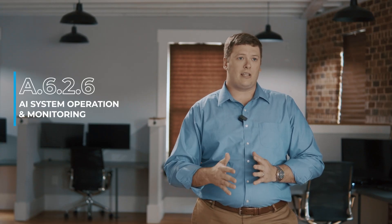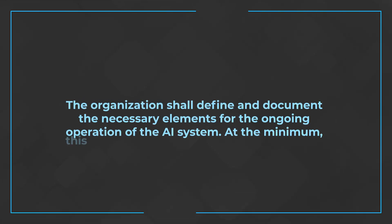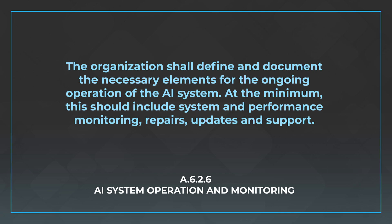The next control is A.6.2.6, AI system operation and monitoring. This control is all about defining how you're going to monitor the system as it's running. The organization shall define and document the necessary elements for the ongoing operation of the AI system — at minimum this should include system and performance monitoring, repairs, updates, and support. With an AI system there are external dependencies, data sets, compute resources, and more, so you'll need to figure out how to monitor the health and performance of that system and know when repairs, updates, and support may be needed.